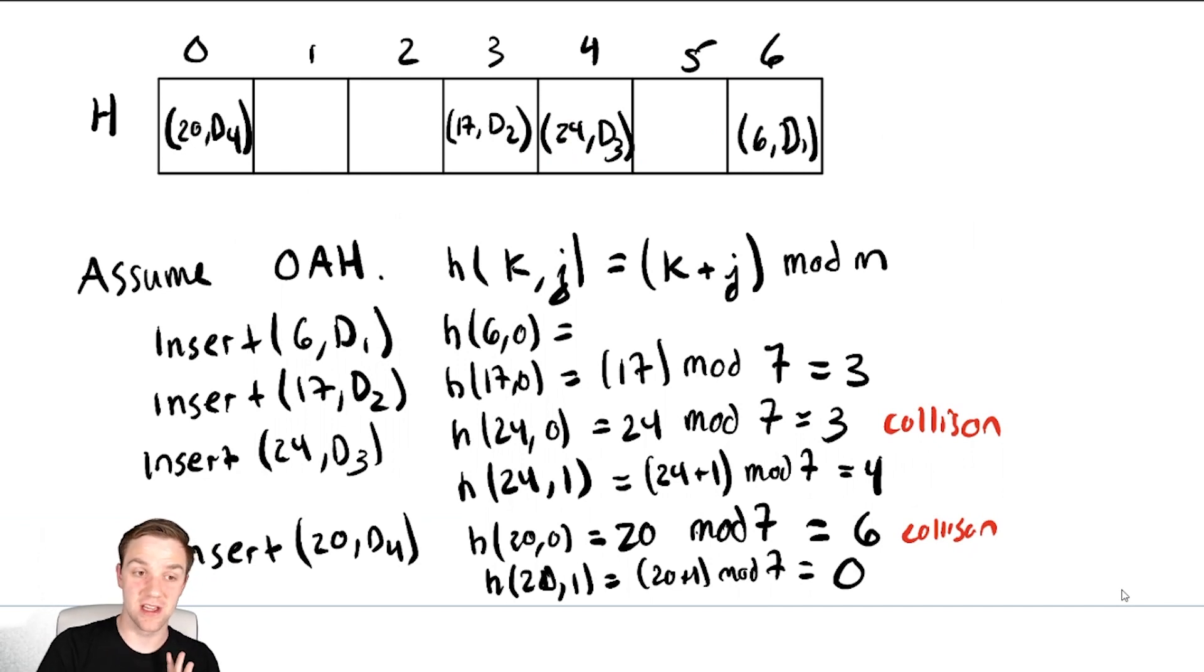It is different than chained hashing because now we only have three locations where we could possibly put elements that are non-occupied, and therefore we will eventually potentially run out of locations in this hash table. We call that a hash table overflow.